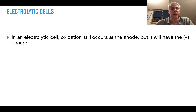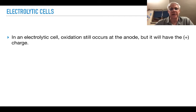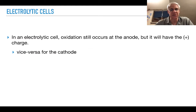Let's look at electrolytic cells. We do have some differences from galvanic cells: oxidation still occurs at the anode and reduction still occurs at the cathode. However, the positive and negative signs of the two electrodes change. In an electrolytic cell, the anode has a positive sign and the cathode, where reduction takes place, has the negative sign.